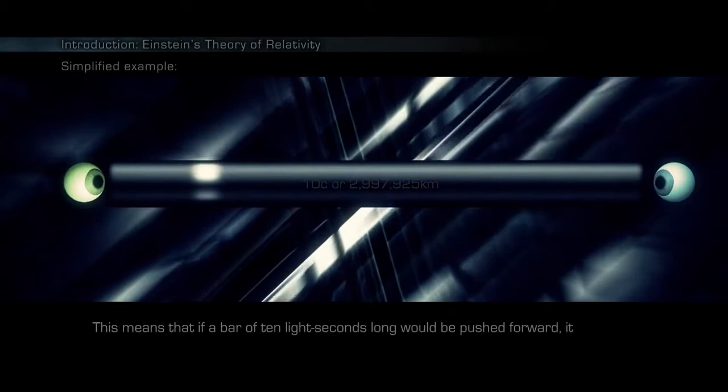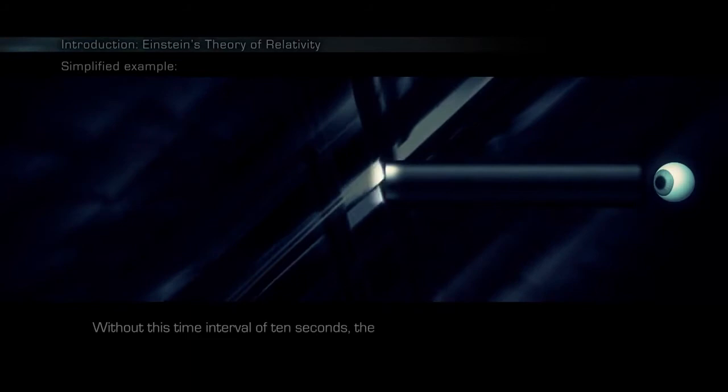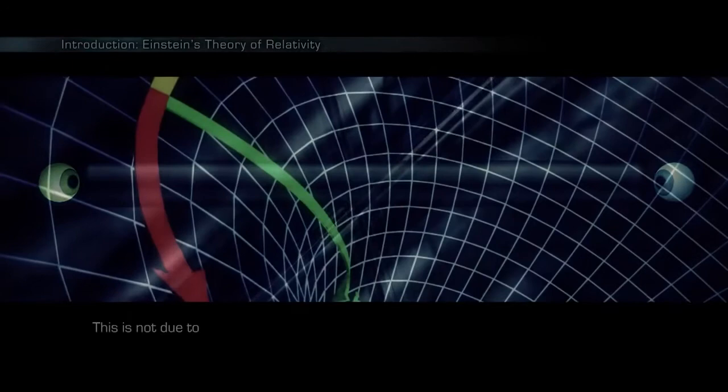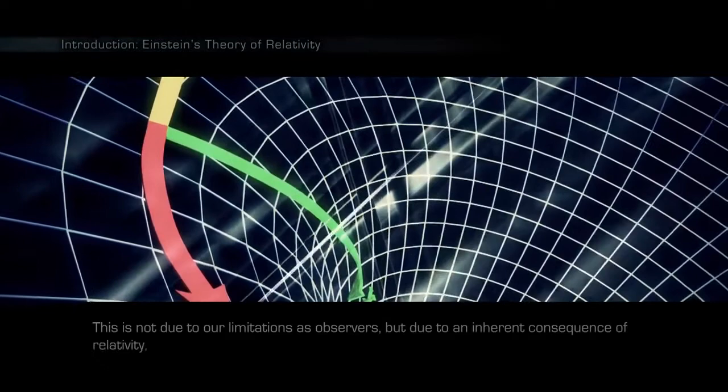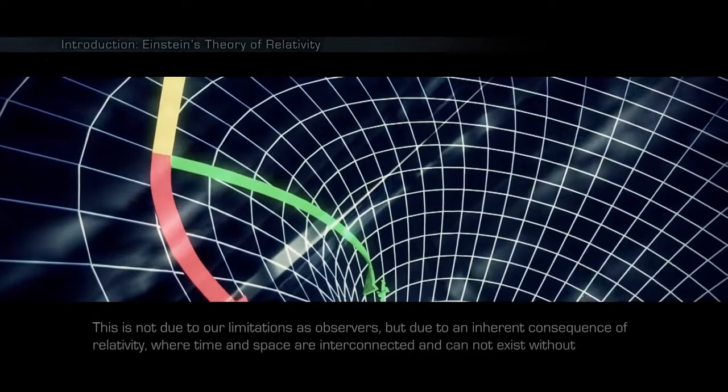Nothing can travel faster than the speed of light. This means that if a bar of 10 light seconds long would be pushed forward, it would take 10 seconds before the action can take place on the other side. Without this time interval of 10 seconds, the bar does not exist in its entirety. This is not due to our limitations as observers, but due to an inherent consequence of relativity, where time and space are interconnected and cannot exist without each other.